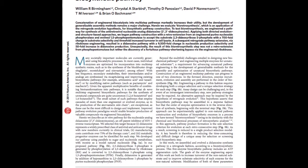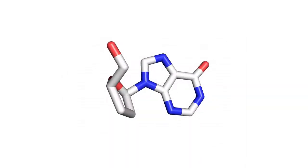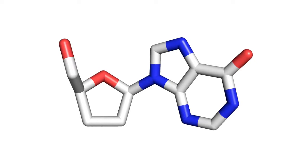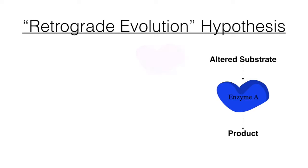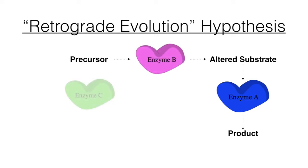Another group, led by William Birmingham, attempted to lower the cost of producing didanosine, another HIV drug, by engineering a completely novel enzymatic pathway. It utilizes the retrograde evolution hypothesis, which claims that new pathways evolved when natural selection favored mutated enzymes that accepted slightly altered substances in times of scarcity. Once environmental conditions changed again, making the new substrate scarce, natural selection would select for mutations of existing enzymes that produce these new substrates from more common precursors. The application of this hypothesis, dubbed bioretrosynthesis, is significantly more efficient than attempting to create a pathway in the forward direction.